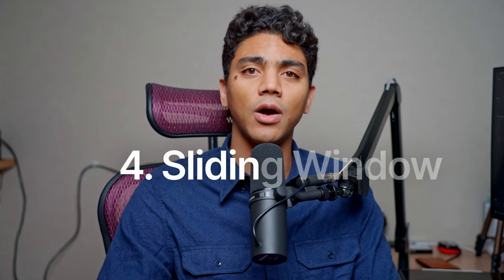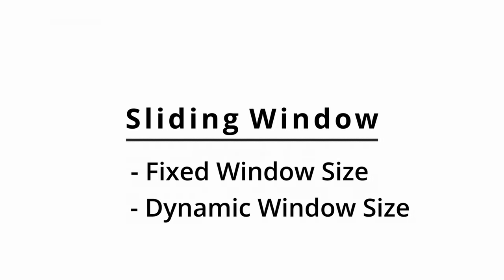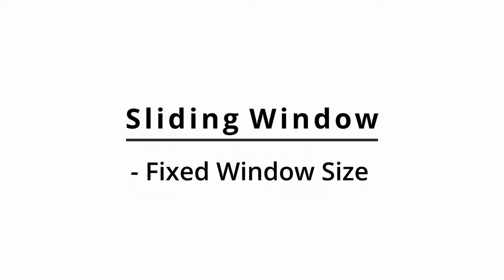Our next algorithm is the sliding window algorithm, which also makes use of two pointers. That's why the two pointers algorithm was covered first. It's important to note that the sliding window pattern comes in two types: one that uses a fixed window size and one that uses a dynamically sized window. The problem will determine which type applies. Let's start with the fixed window size.